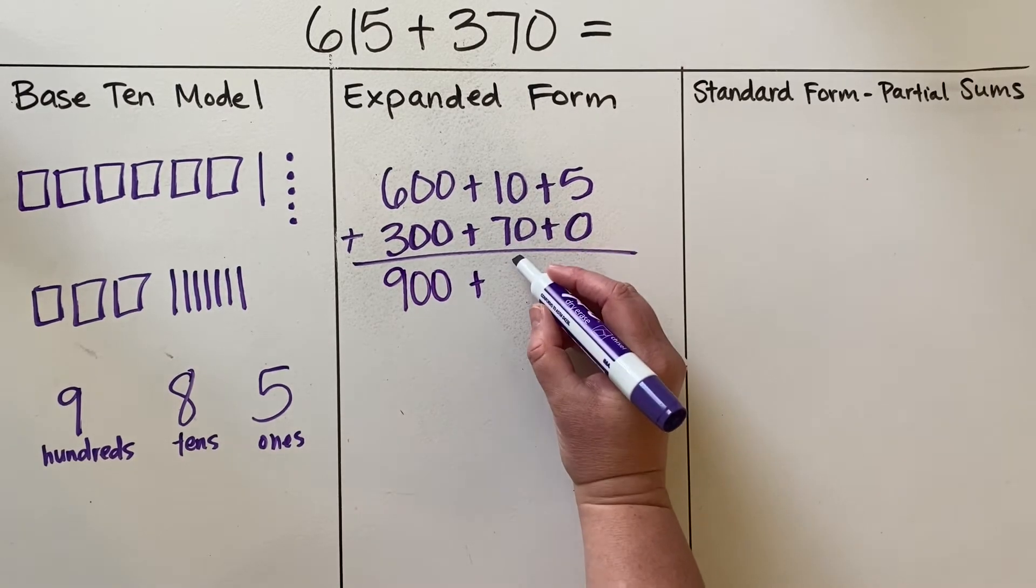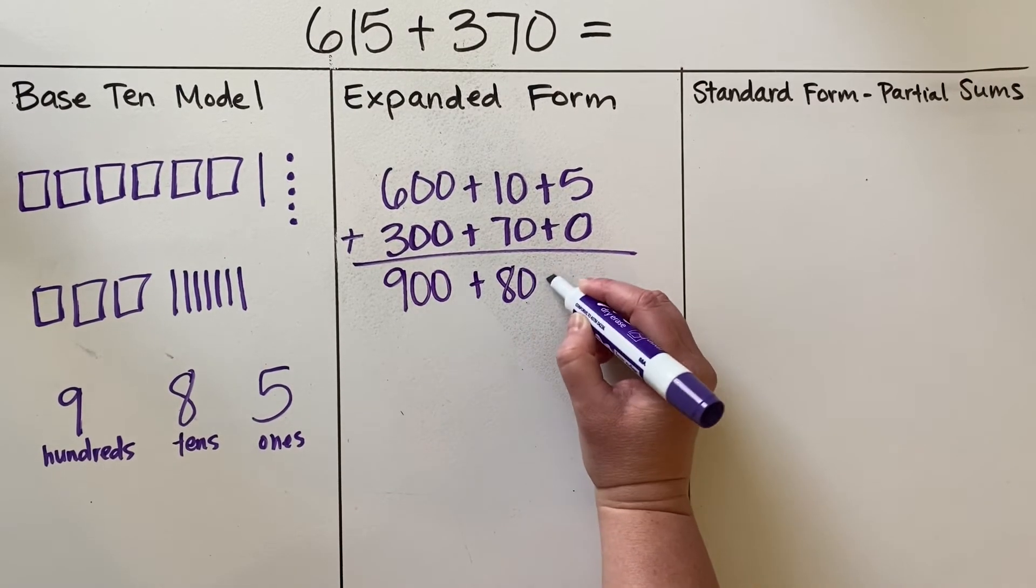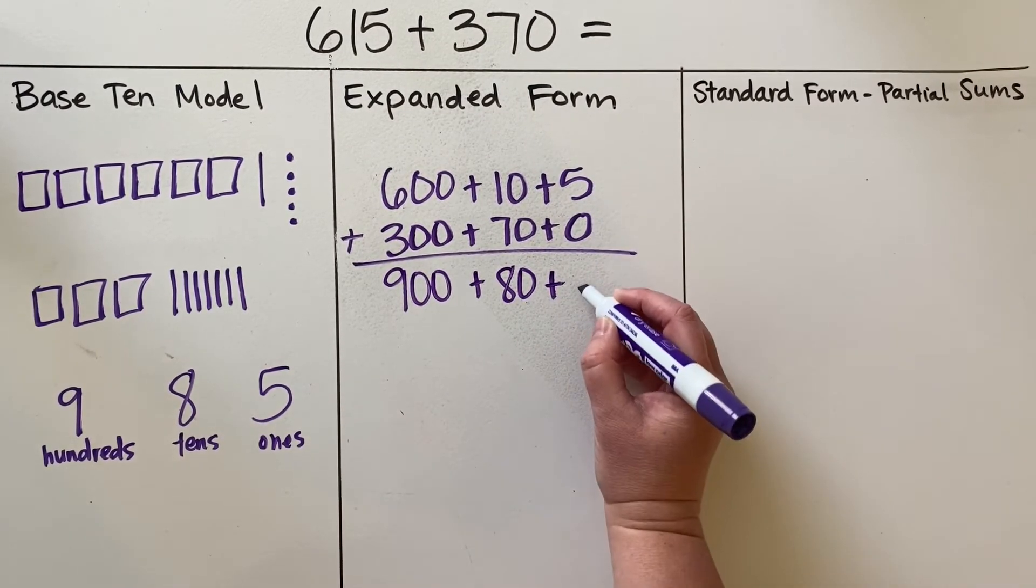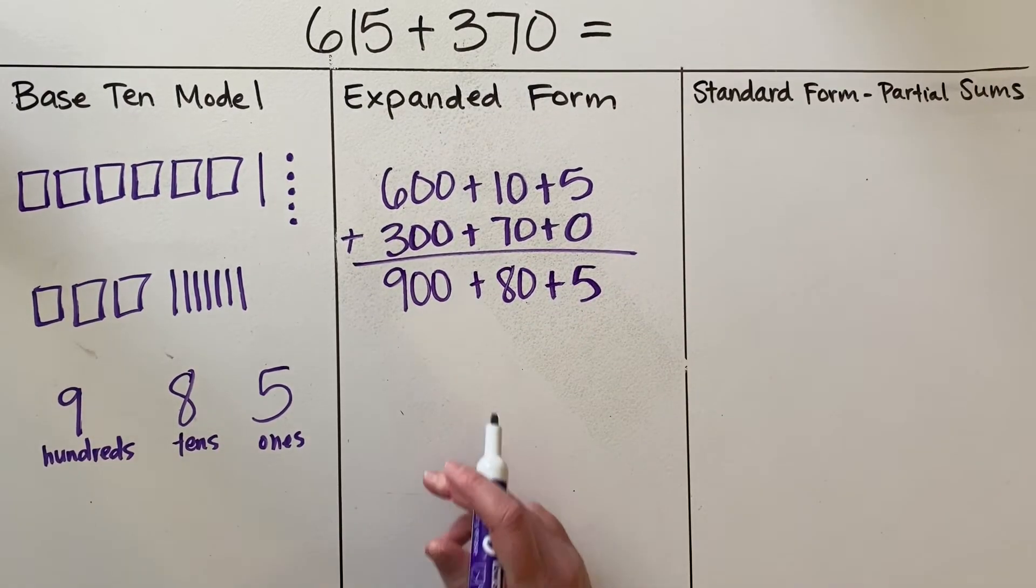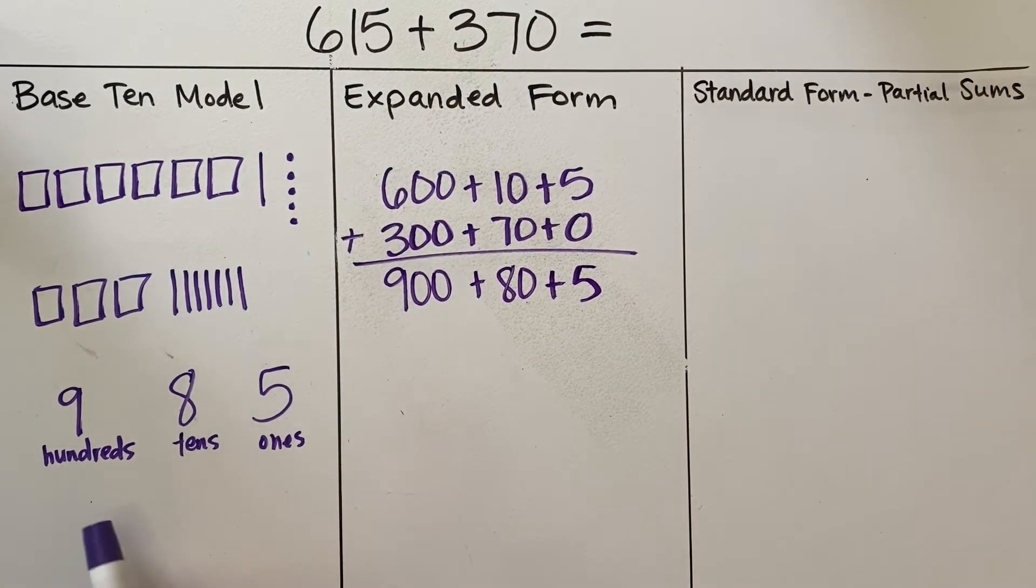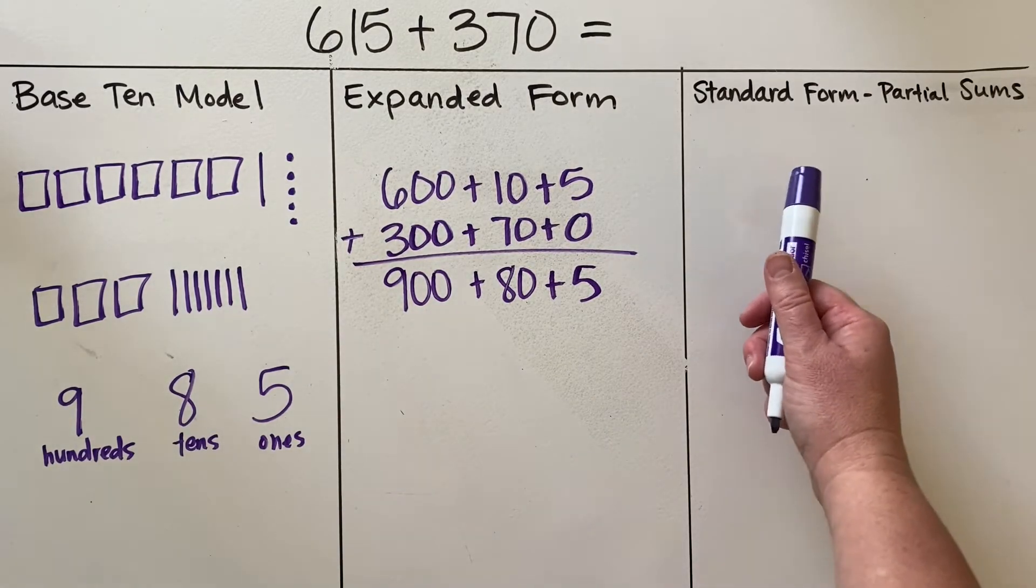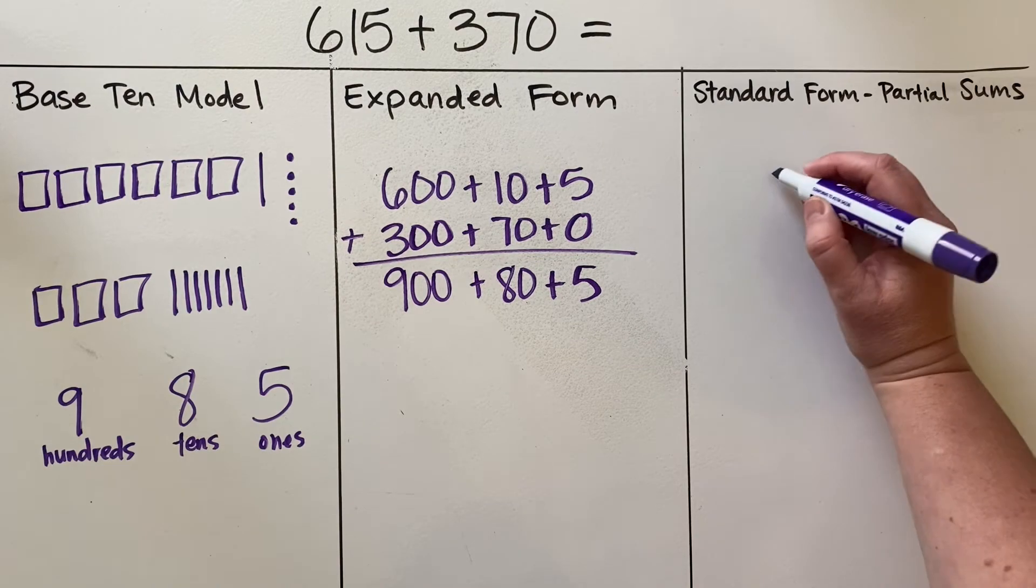So 600 plus 300 is 900. 10 plus 70 is 80. And 5 plus 0 is 5. Notice how that looks a lot like what is over here for our base 10 model.